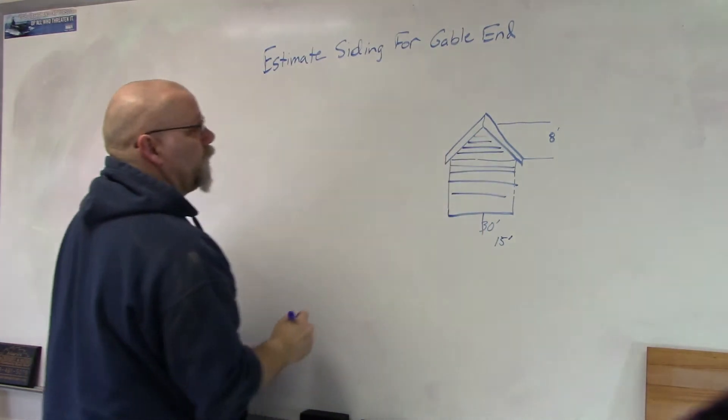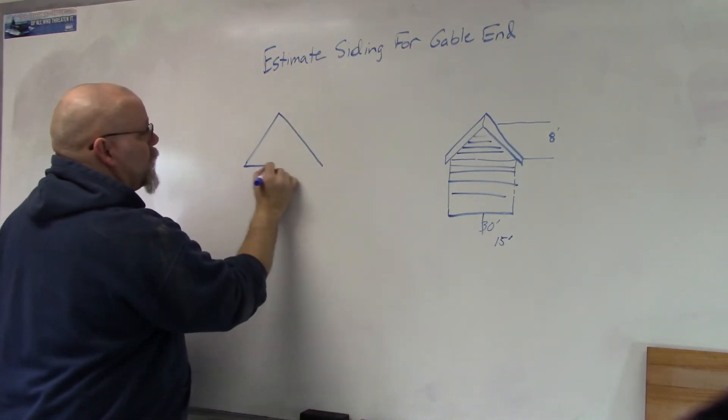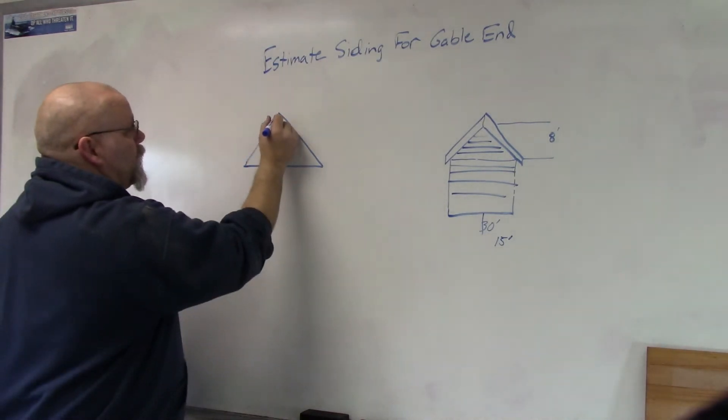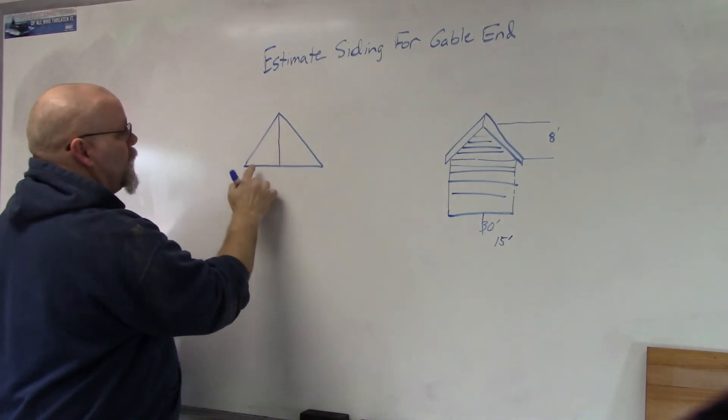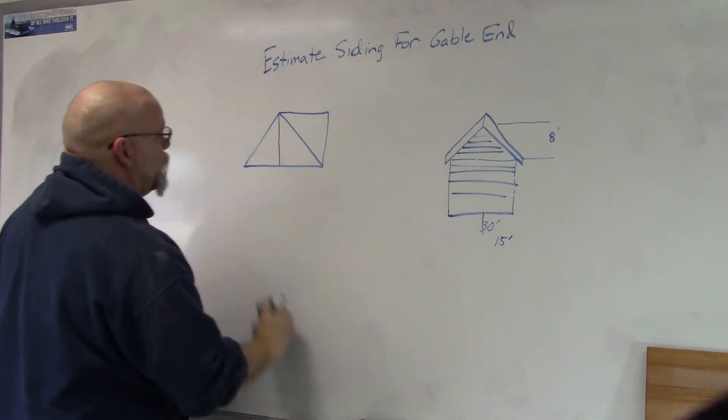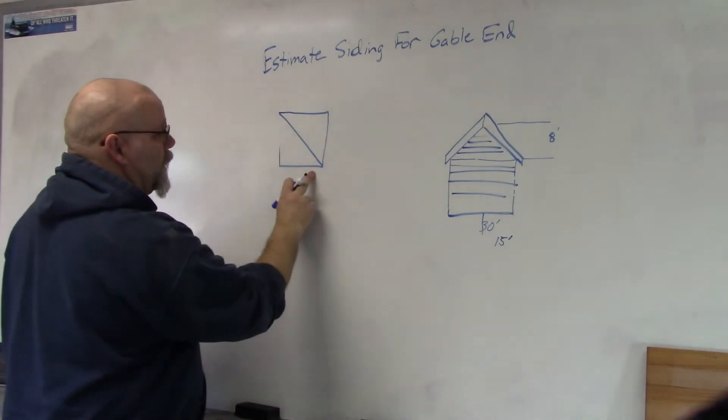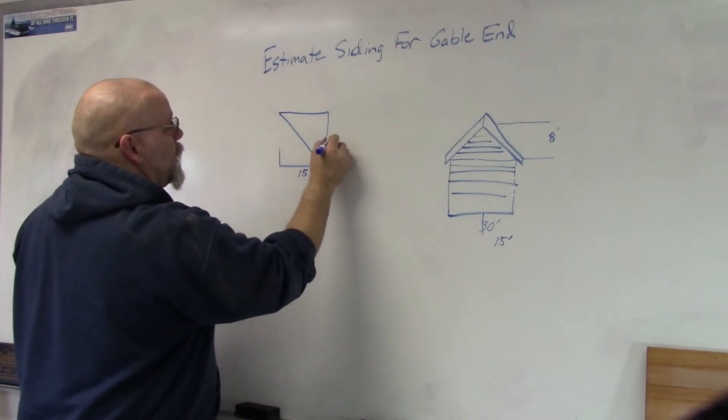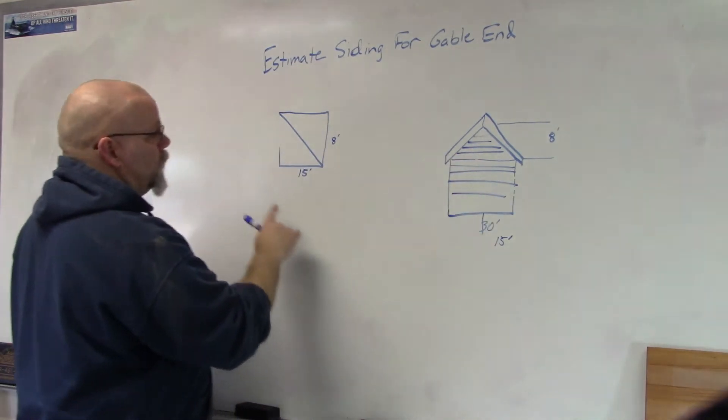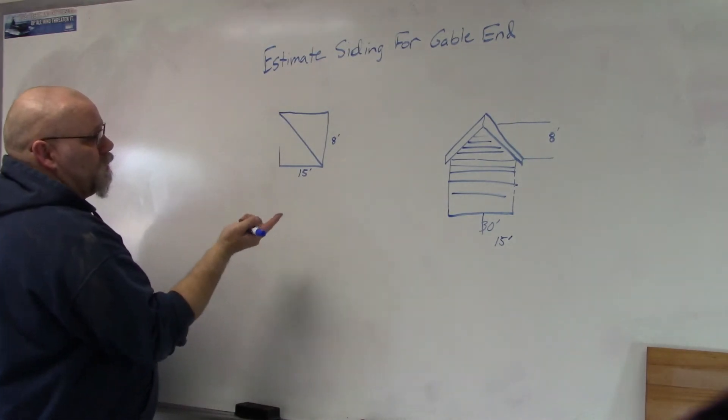All right, so we start out with the triangle. Now you can go and figure it out for a triangle, but what works is if you take and you divide this in half, and then you take this part and you flip it over to there, now you have a rectangle. So this is 15 feet by 8 feet, because these two pieces will make one rectangle.